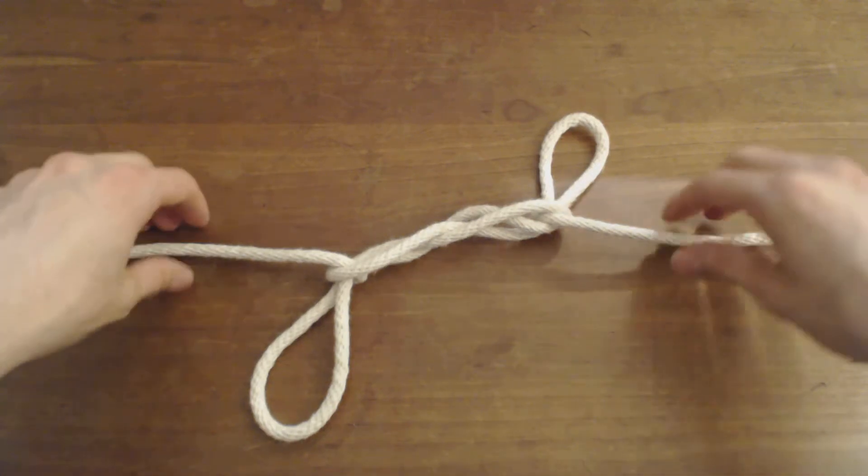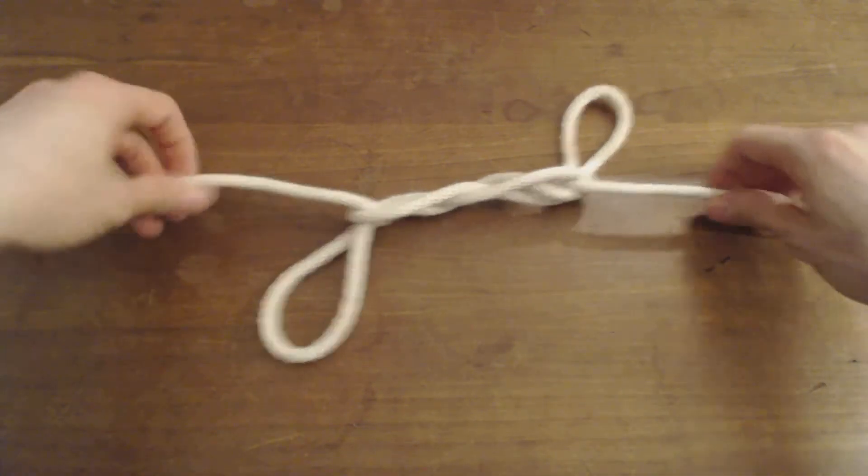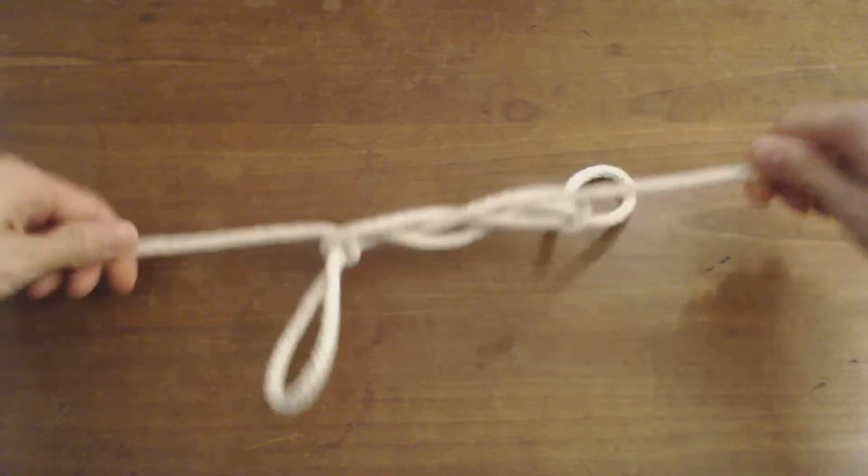Hi YouTube, in this video I'll show you how to tie the sheep shank, which is a knot you can use to shorten a rope. So here's what the final product looks like.